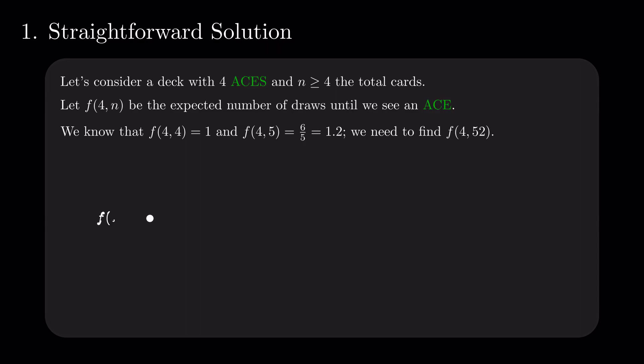In the matter of f of 4 and n, either the first card is an ace, meaning that we needed only one card, which happens with probability 4 divided by n.